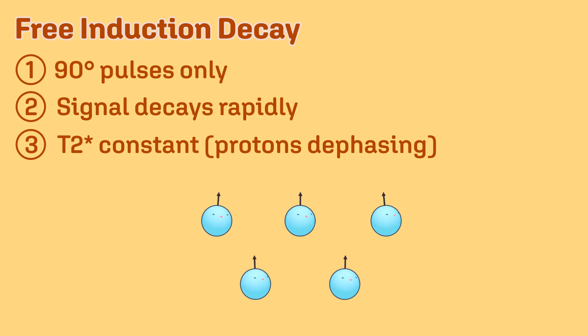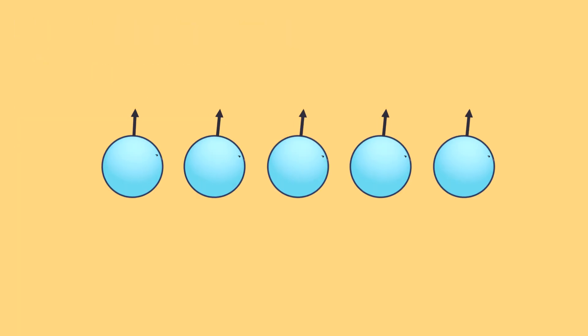This exponential decay in the synchronization of proton spins is due to the fact that each proton experiences the magnetic field at a slightly different strength, meaning there is never true uniformity in precession. These differences in precession end up compiling, leading to increasingly asynchronous spins.